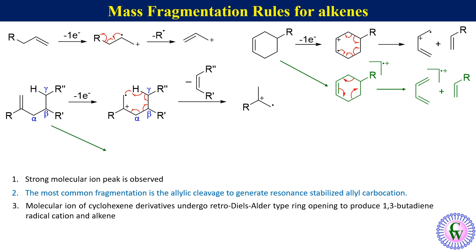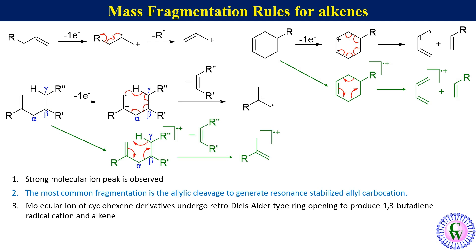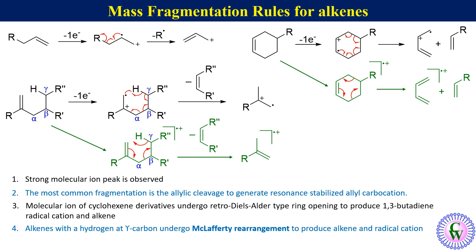You can also draw the mechanism differently; the molecular ion is drawn by just drawing the molecule and then putting an inverted L with radical cation. The radical cation is drawn by just drawing the alkene and putting an inverted L with radical cation over it. Thus the third rule may be stated as: alkenes with a hydrogen at the gamma carbon undergo McLafferty rearrangement to produce an alkene and a radical cation.